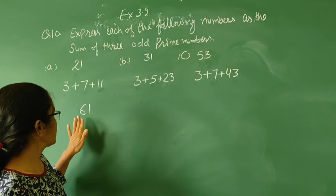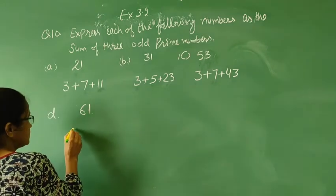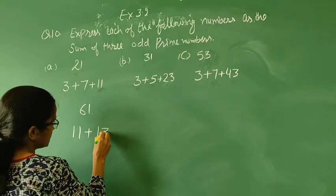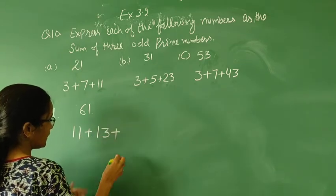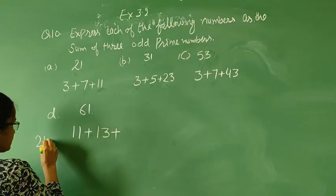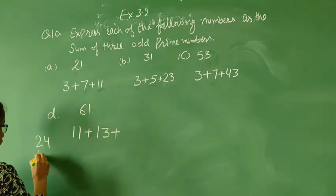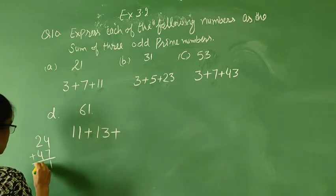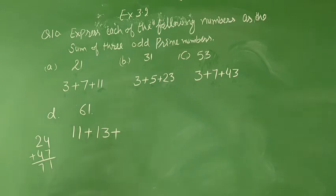Next thing is 61. Now, here, we take 11 plus 13, 11 plus 13 is 24. If we add 47, 24, then we get 74.